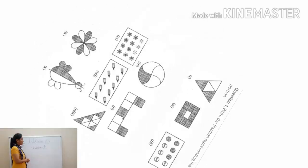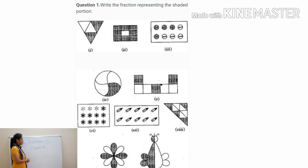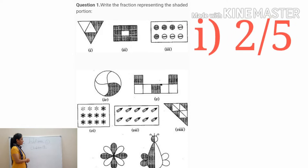Question number 1: write the fraction representing the shaded portion. We have some figures and we have to write down the fraction of the shaded part. Let's start part A. How many total parts are there in this figure? 1, 2, 3, 4, 5. So in the denominator, the total number of parts should be 5. And how many are shaded? 2 are shaded. So the fraction would be 2 upon 5.